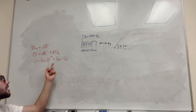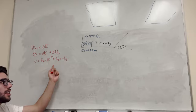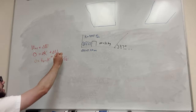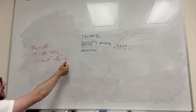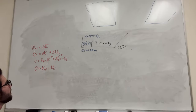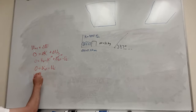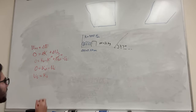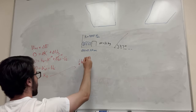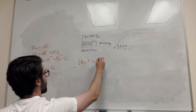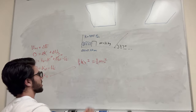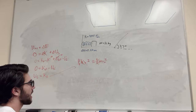Our change in spring energy: U-spring-final is also going to be zero because the spring goes back to its neutral position after the block leaves it, so we don't have to worry about energy held by the spring after the block leaves. What we're left with is K-final minus U-spring-initial. So we can rewrite this: U-spring-initial is equal to K-final.